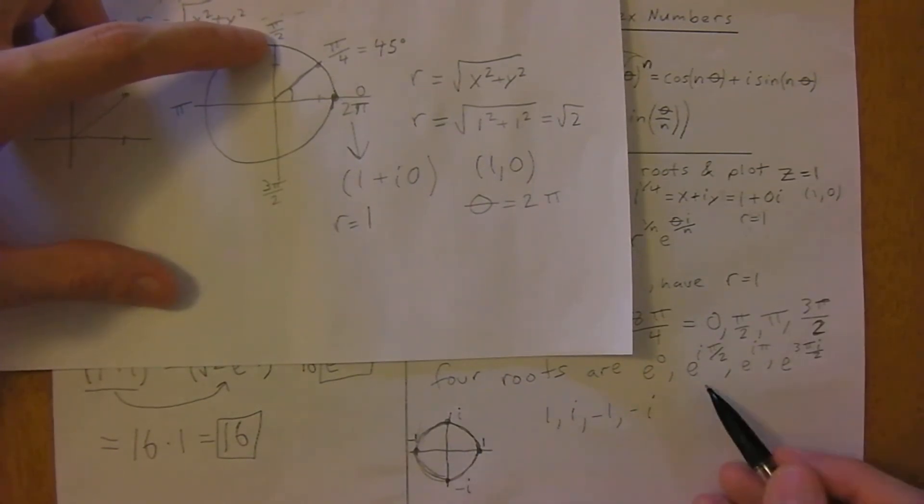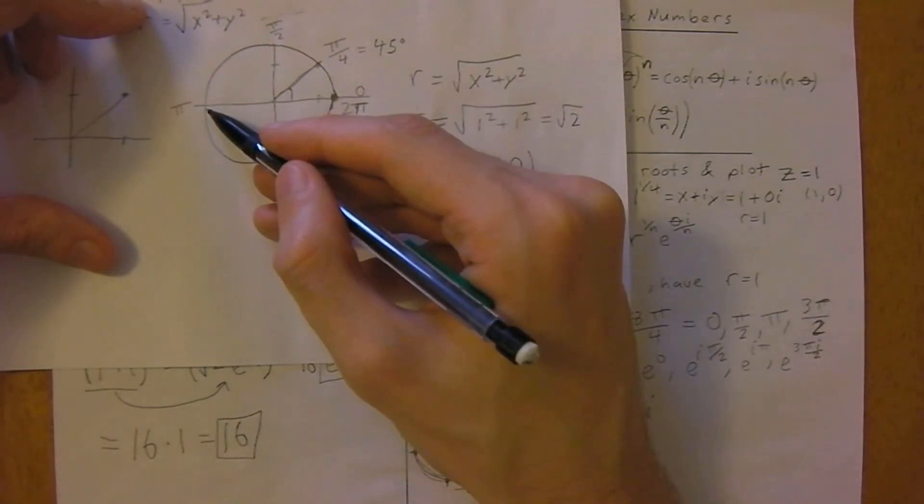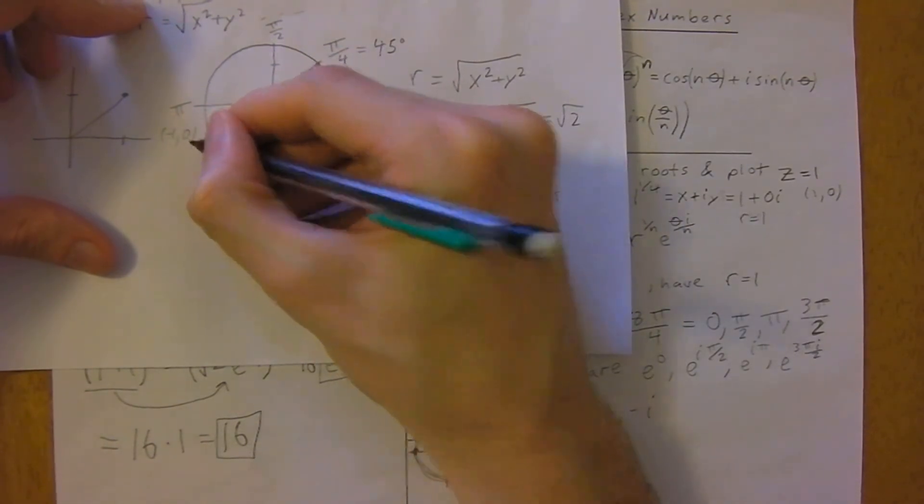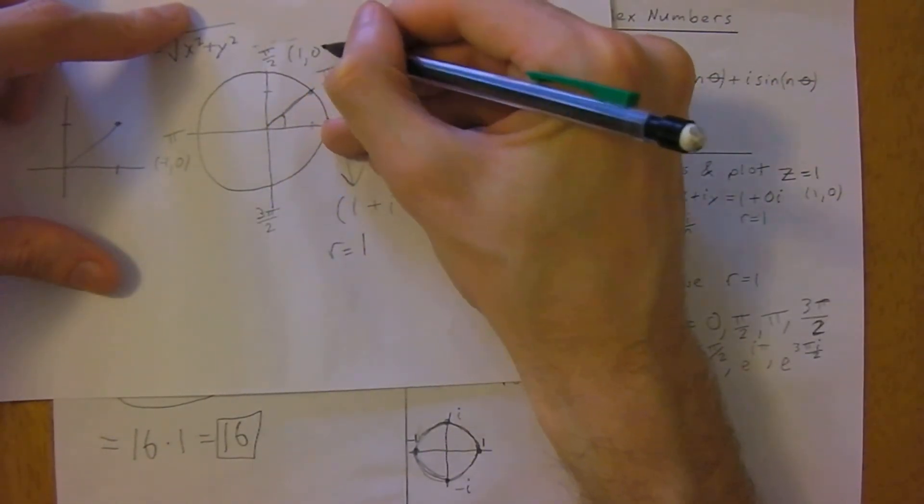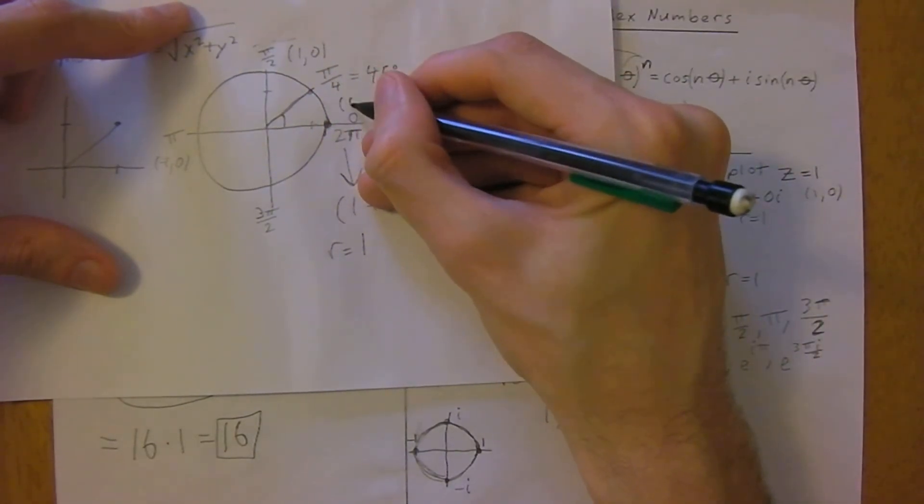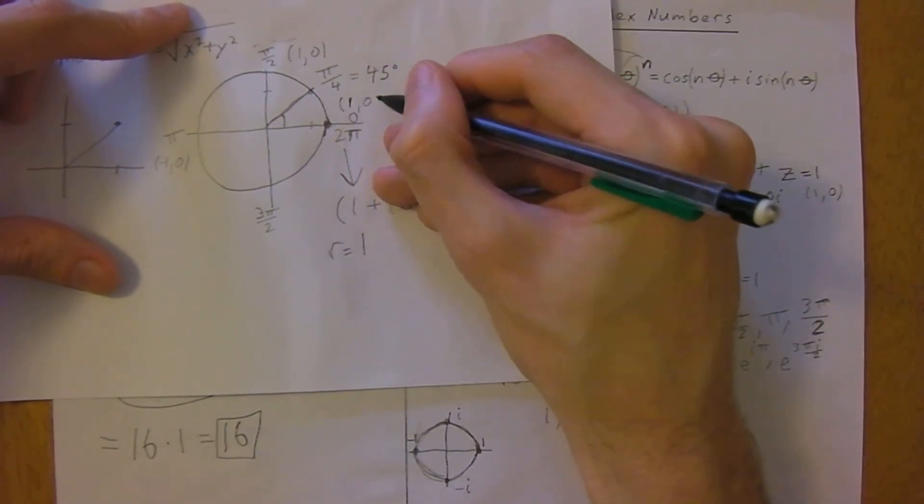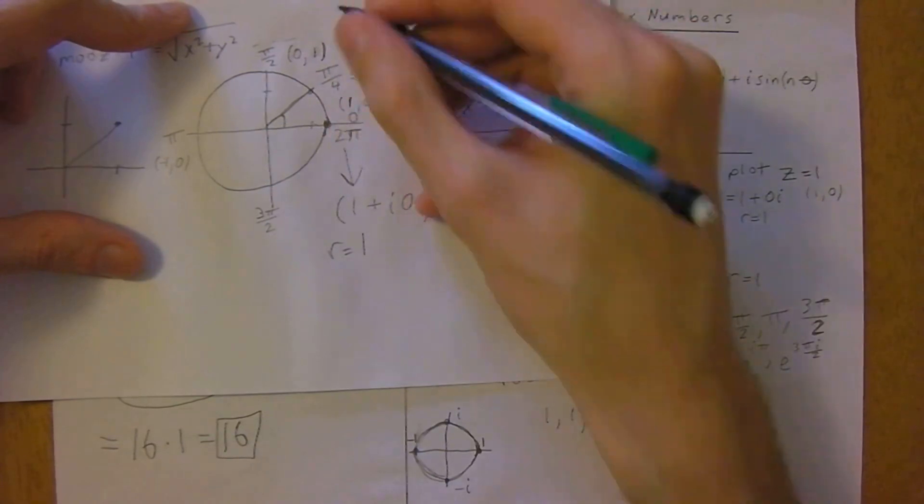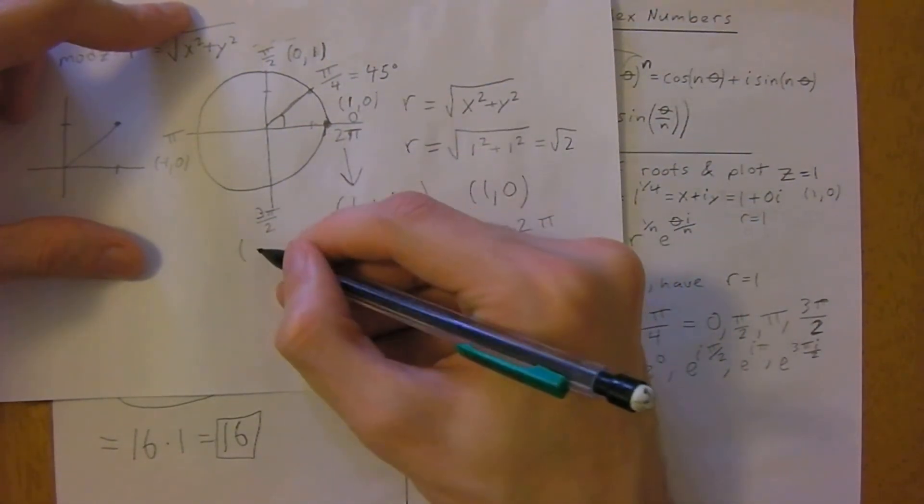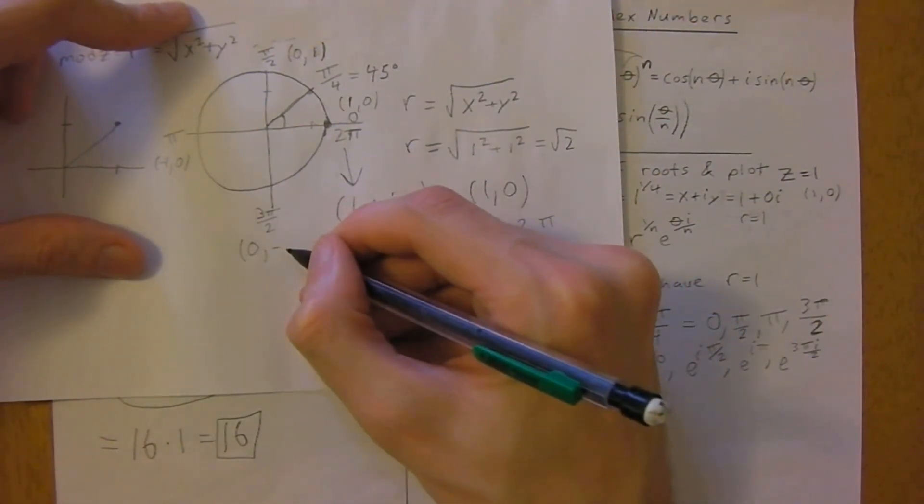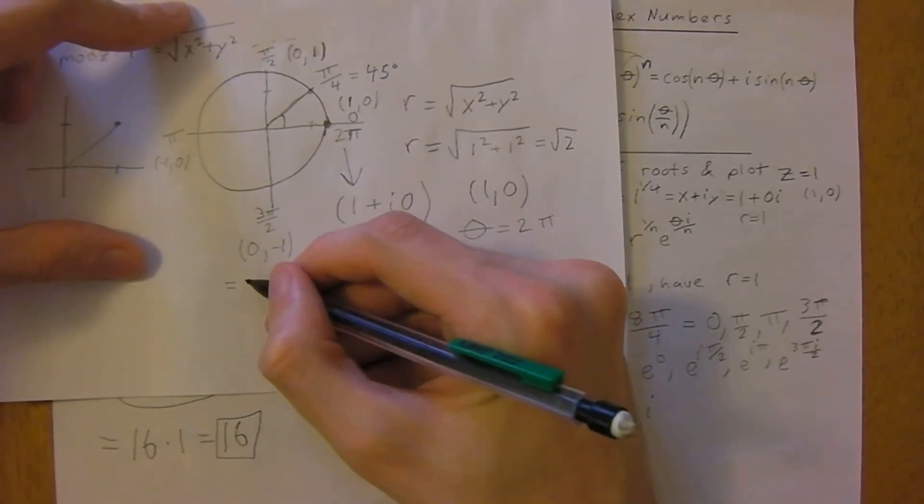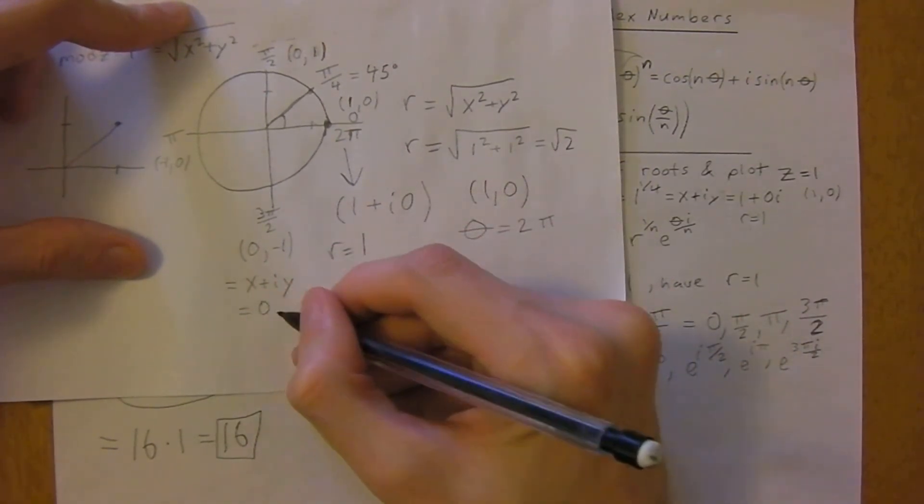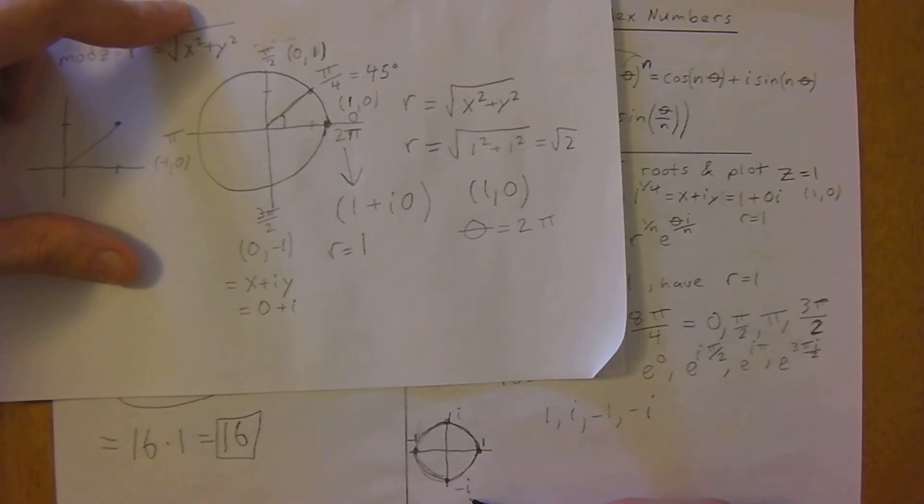At pi, we're going to go all the way around the circle and get to the point negative 1, 0. Up here we're at the point 0 on the x-axis but 1 on the imaginary axis. Down here we'll be at 0 on the x-axis but negative 1, which is the same as 0 plus negative i down here.